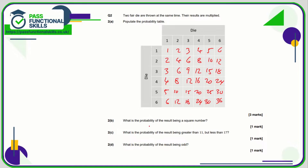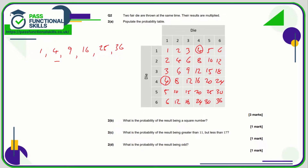What is the probability that the result is a square number? The square numbers are: one (1×1), four (2×2), nine (3×3), sixteen (4×4), twenty-five (5×5), and thirty-six (6×6). Down the diagonal we have the square numbers, but we need to be careful because four also appears in other places. Counting all square numbers: one, two, three, four, five, six, seven, eight — that's a total of eight out of thirty-six.